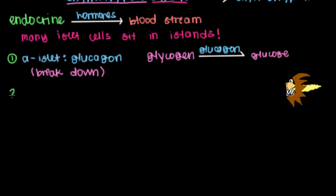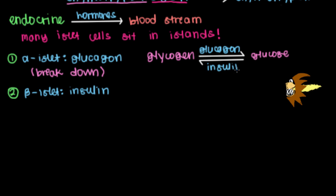The next type, and perhaps the most famous, are our beta islet cells. Beta islet cells house and release insulin. Insulin causes the opposite reaction — instead of breaking down glycogen into glucose, insulin causes glucose to be stored or built up into glycogen. And again, it's not just for carbohydrates; insulin is responsible for the buildup or storage of a whole bunch of macromolecules.